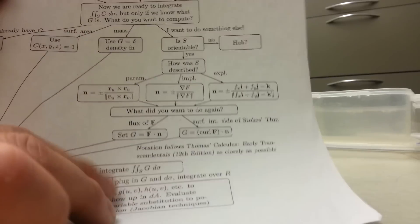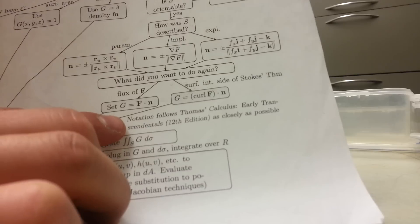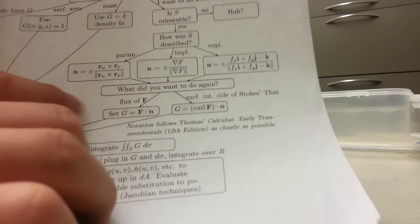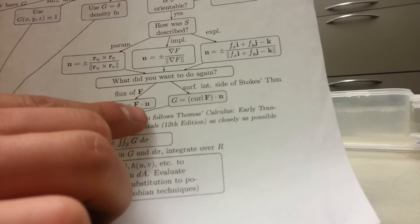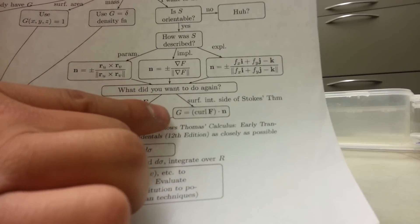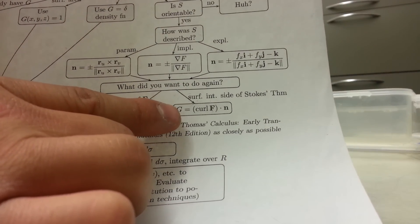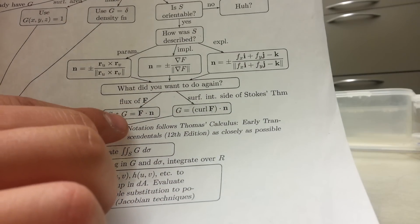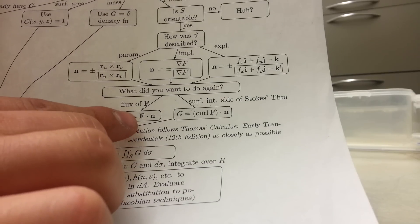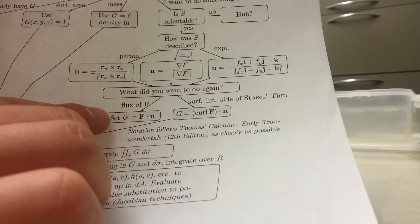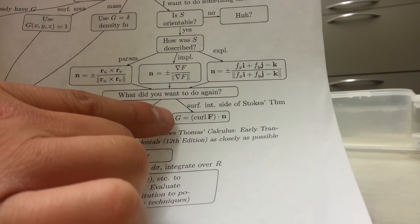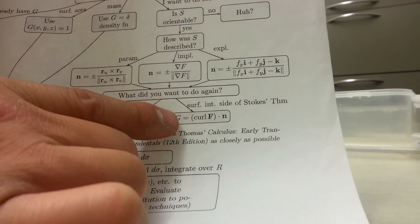So the scalar function capital G can be the dot product of the vector field F and N. N is the vector function of unit normal to your surface. Or G can be a curl of your vector field, which is its own vector field, dot product with N. And you'll notice that when you set up the surface integral and you integrate G over your surface of F dot N, then this is the surface integral that shows up on the surface integral side of the divergence theorem. And if you use this as your G, then this is the integral that shows up on the surface integral side of Stokes' theorem.